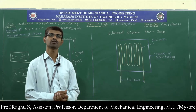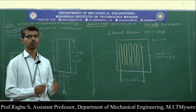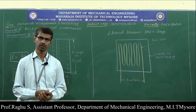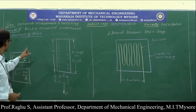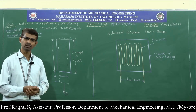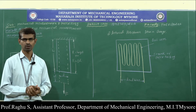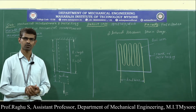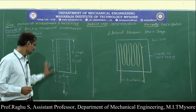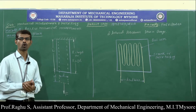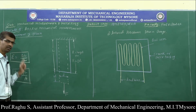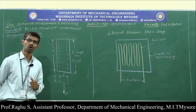In this session, we will discuss strain measurement. Before discussing strain measurement, let us first understand what strain means. Strain is defined as the change in dimension of an object to the original dimension. With respect to length, strain is defined as change in length to the original length. Therefore, strain is given by: change in length divided by original length.